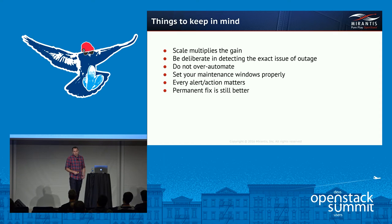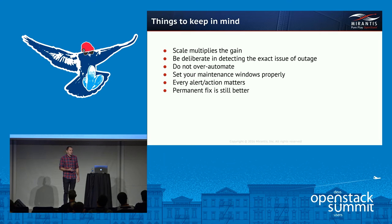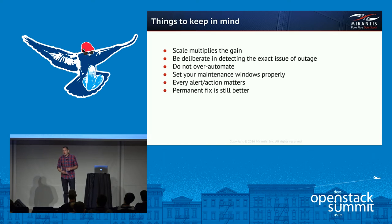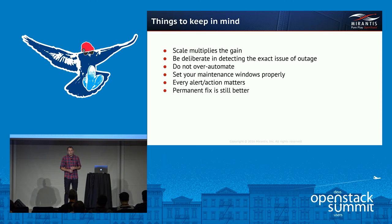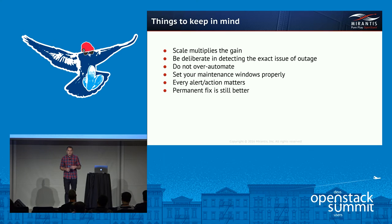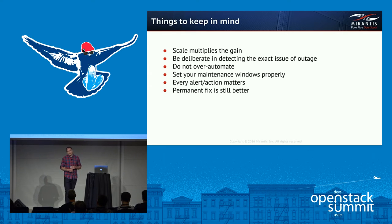Be deliberate in detecting the exact issue of an outage. You want to run your automation scripts against the problem they are actually solving. You don't want to restart MySQL replication if just a single MySQL process died — you can just restart that process. Do not over-automate; leave things like database corruptions or network outages to humans. Also, set your maintenance windows properly. Right after we implemented auto-remediation of the Nova Compute services, one engineer doing an upgrade stopped Nova Compute in the whole data center, but because he set the wrong maintenance period in Zabbix, it all came back up after a couple of minutes. So be careful not to run actions when they're not needed.